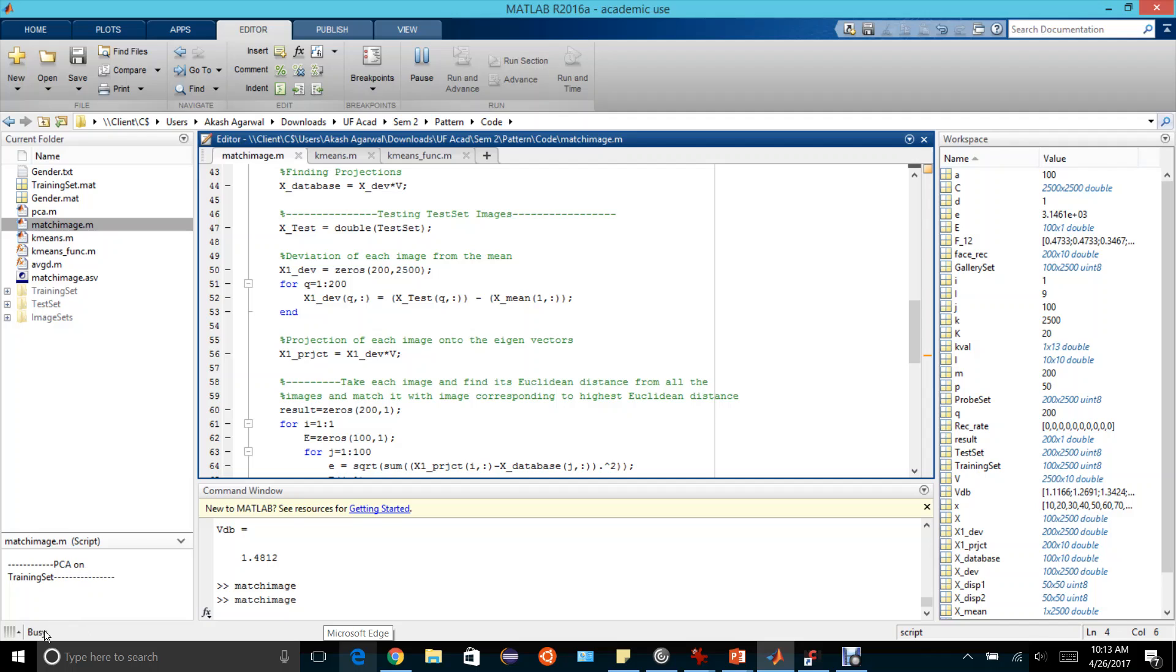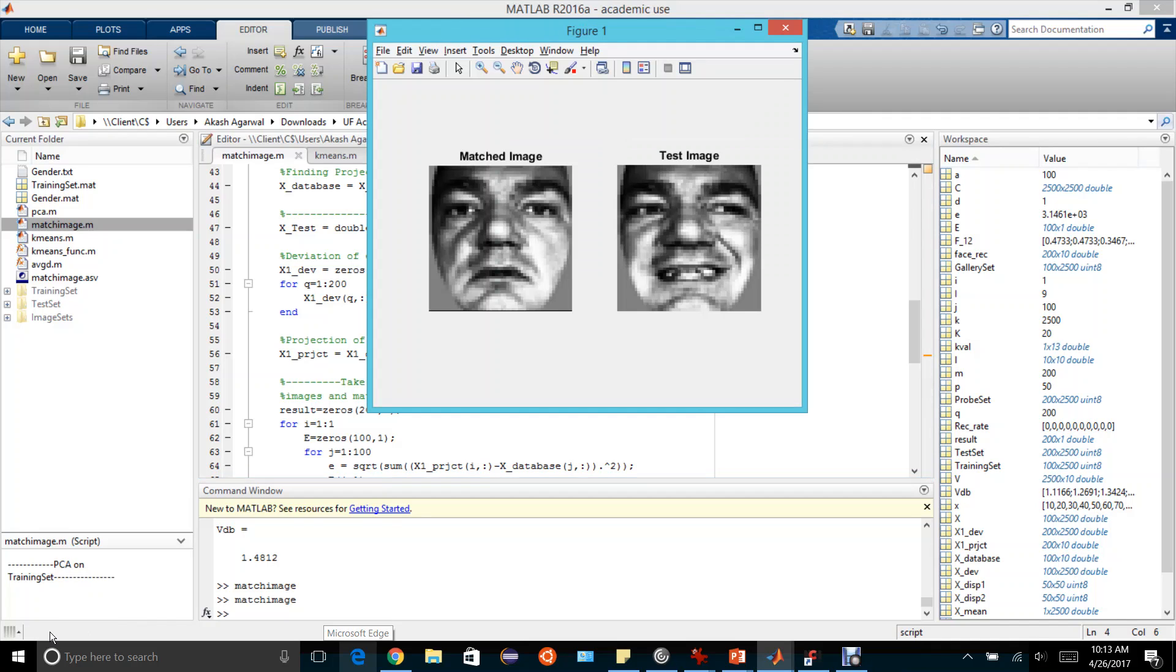Now we can see the algorithm is running here. And here voila, we get the match image as compared to the test image. From this result, it is observed that even though there are expression changes and certain light changes in the test image, it is still able to identify the match image correctly. Now we go back to our presentation.